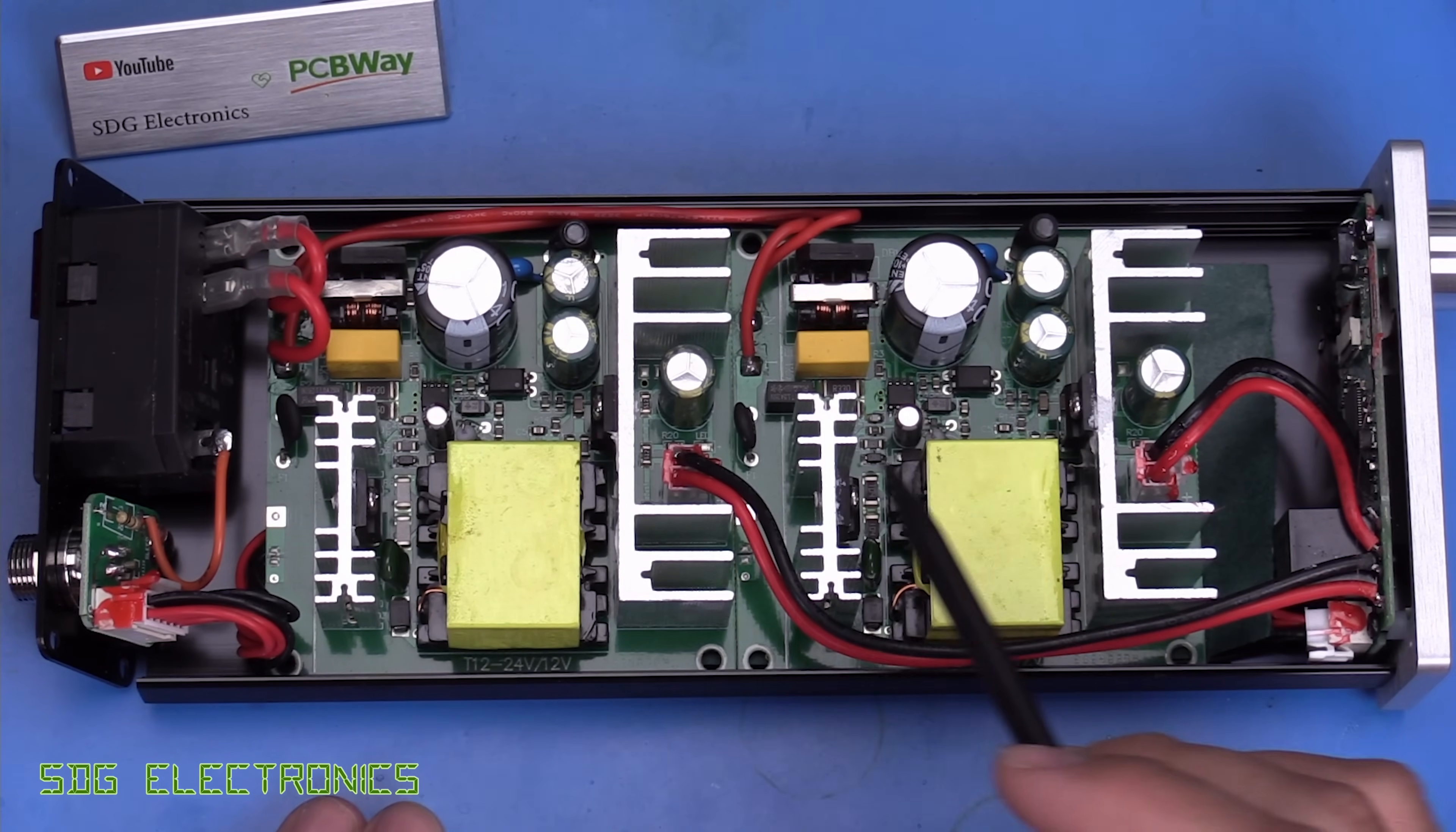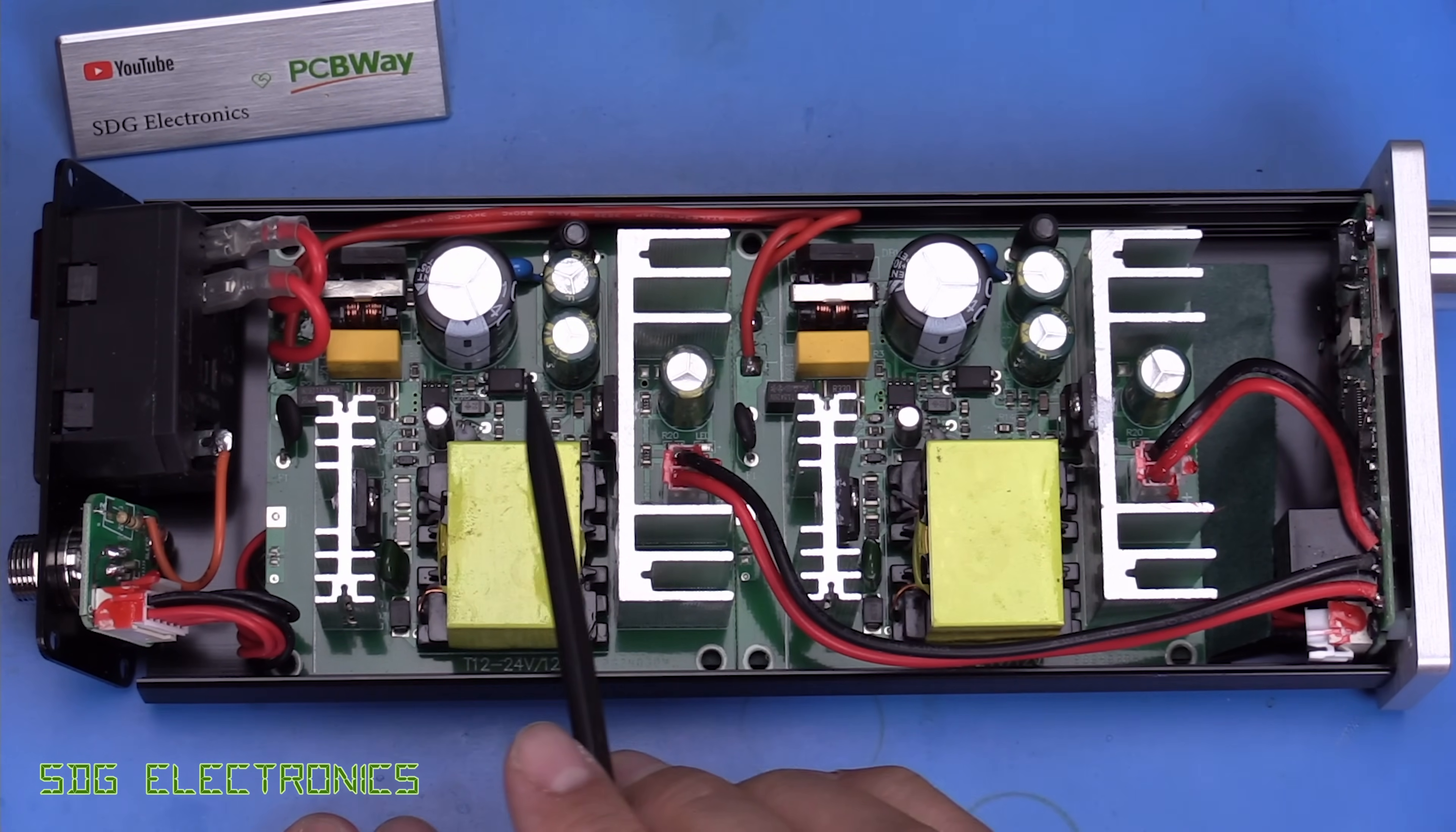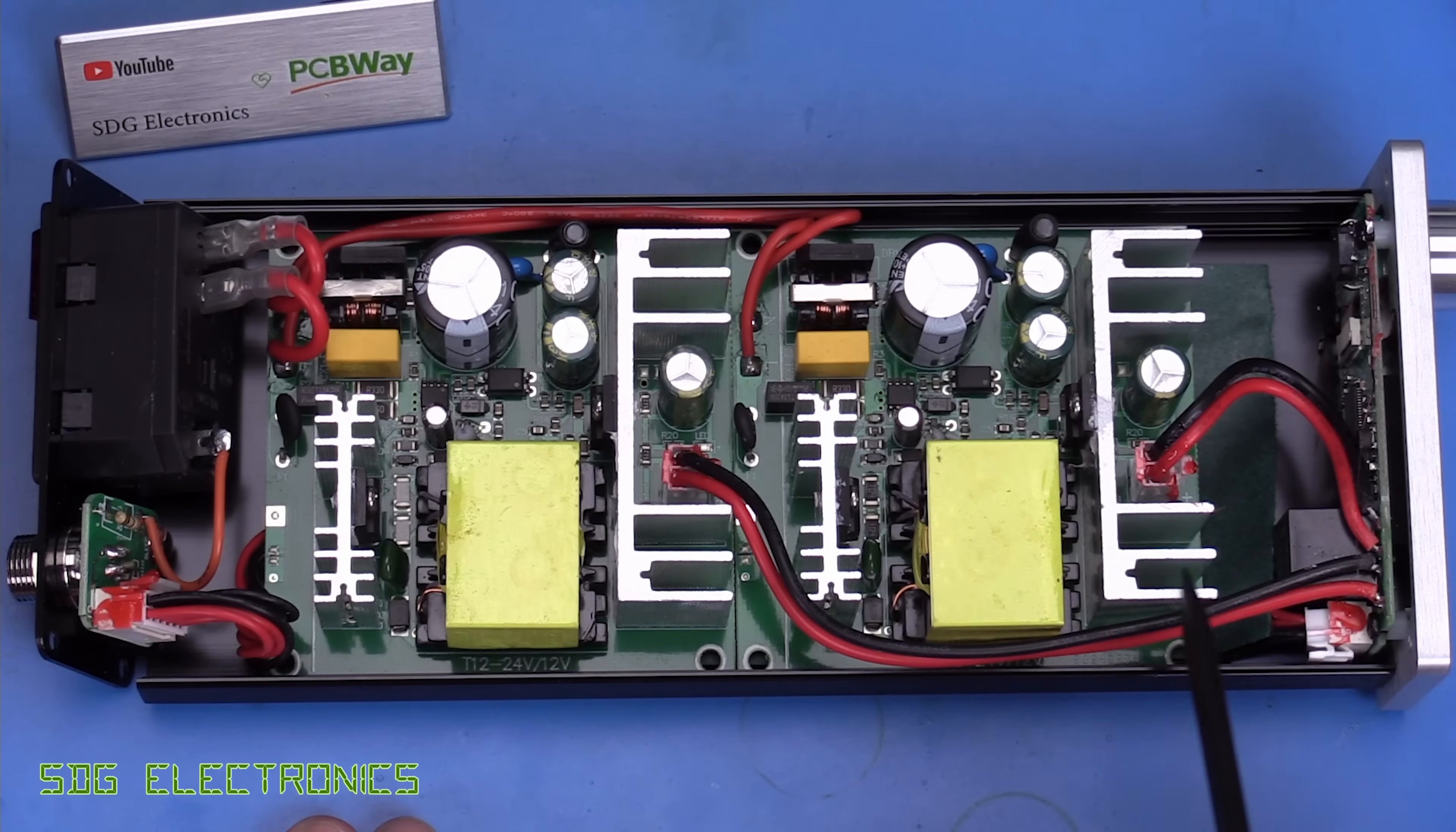Here's what it looks like with the cover off. And the first thing that we notice is that we've got two power supplies here. We've got the mains coming in at the back, and we've got a mains connection to both of these power supplies. And then the outputs of these seem to go to the front panel board over here.